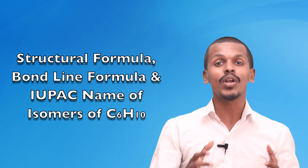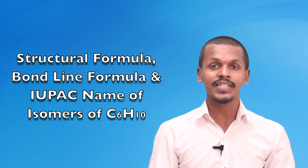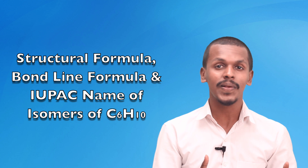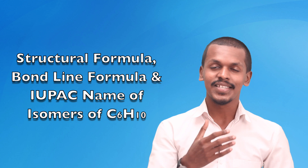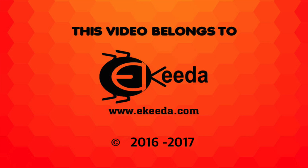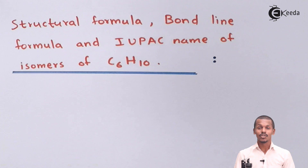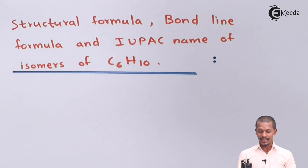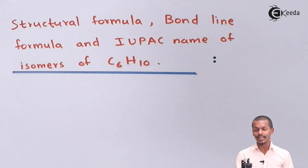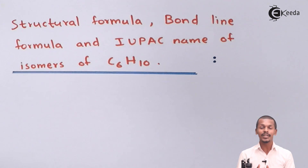It is very essential for us to understand the different kinds of isomers for the molecular formula C6H10. Along with that, we are going to do the bond line formula. C6H10 resembles the general formula CnH2n-2, since with n=6, 2n-2 equals 10. This means these are isomers of an alkyne with 6 carbon atoms.